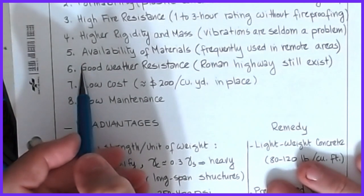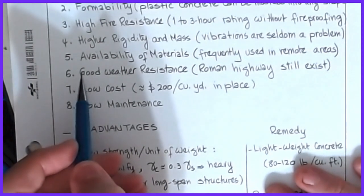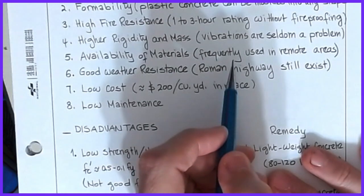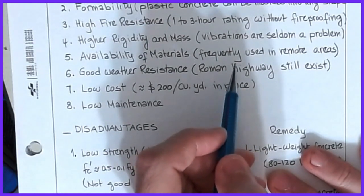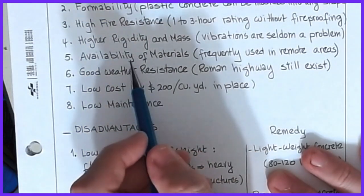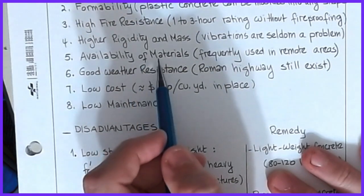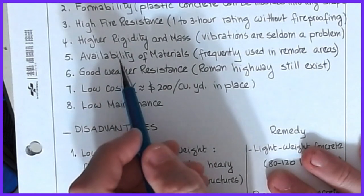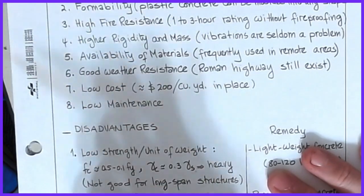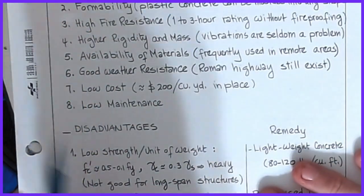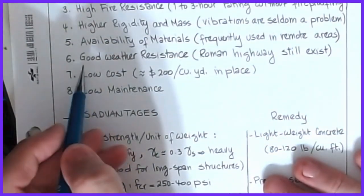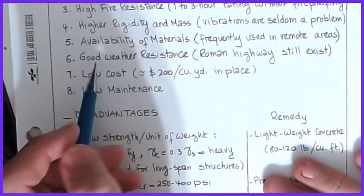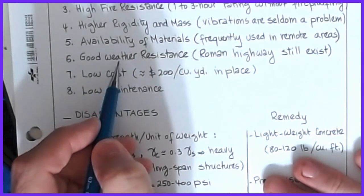The availability of the materials worldwide is another advantage — even in remote areas like the Middle East or Caribbean islands, concrete materials are readily available, whereas steel may be a premium or harder to obtain. We also talked about weather resistance: if we pay attention to cracking, concrete weathers very well. That Roman highway I walked on several years ago is still in existence today.